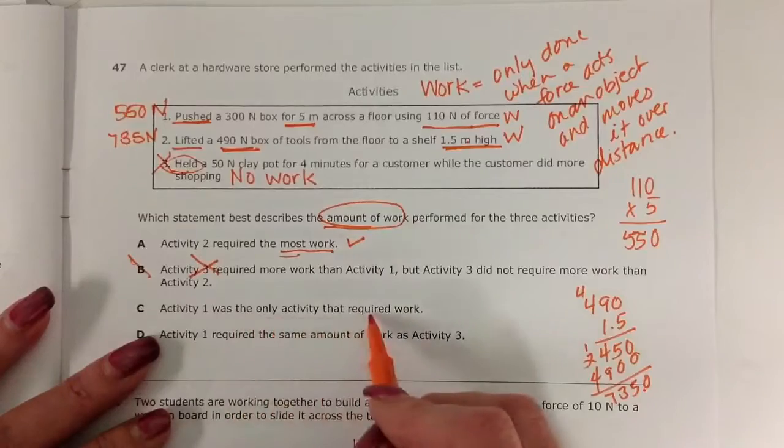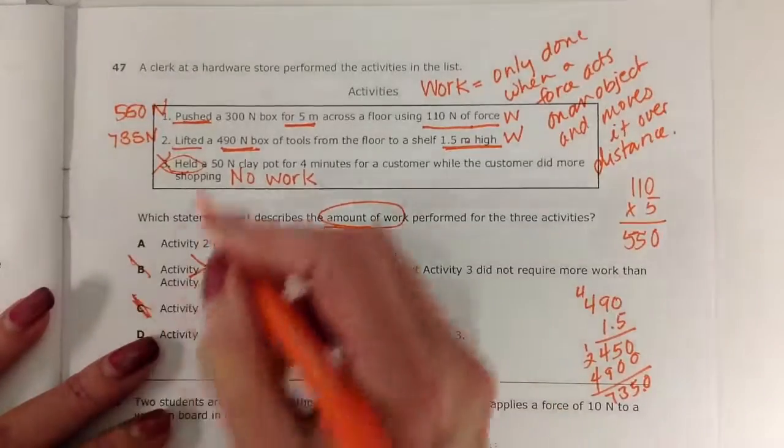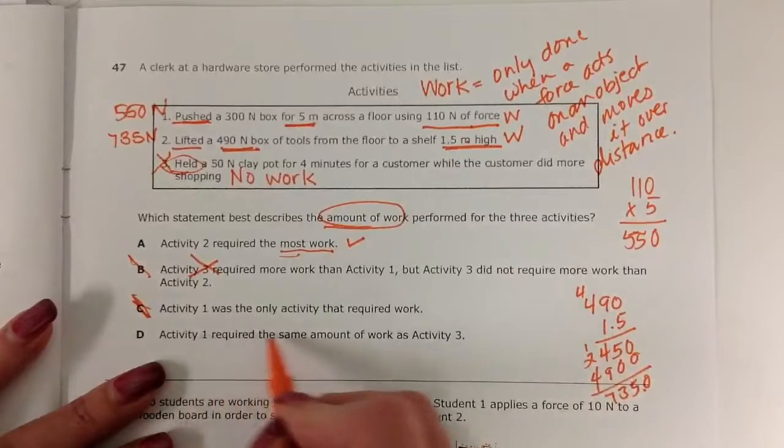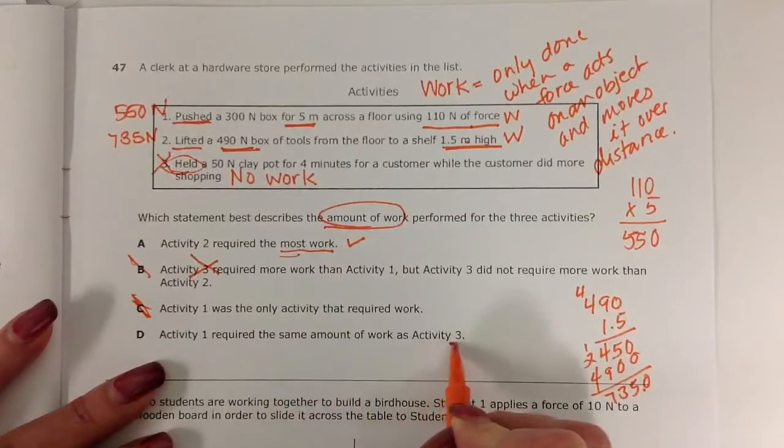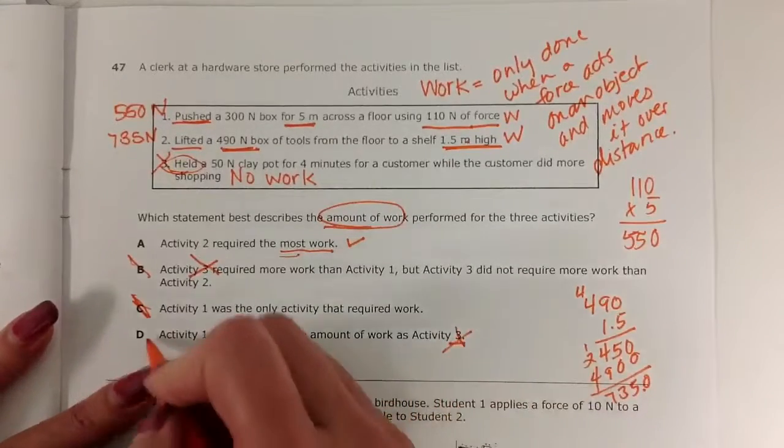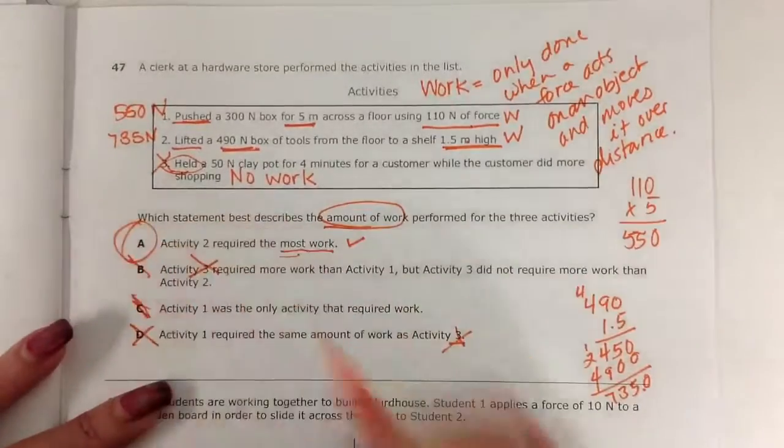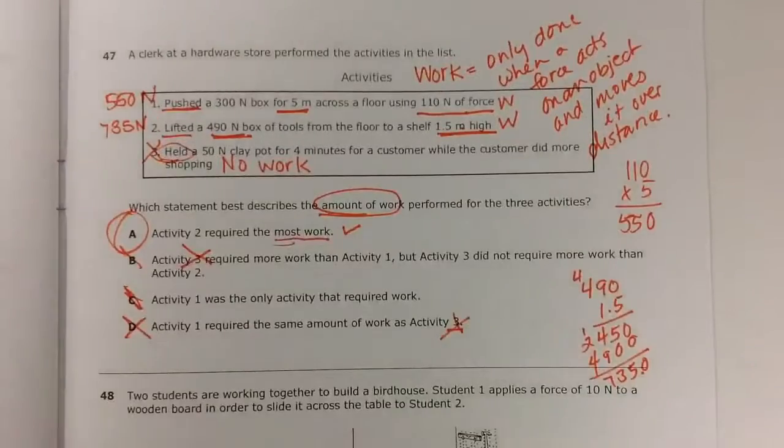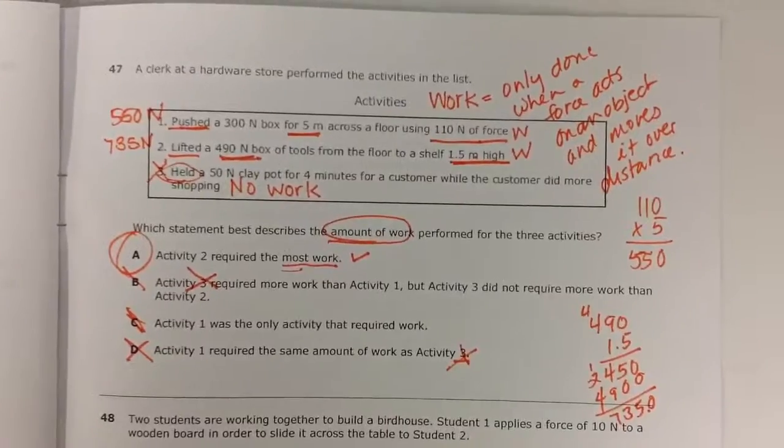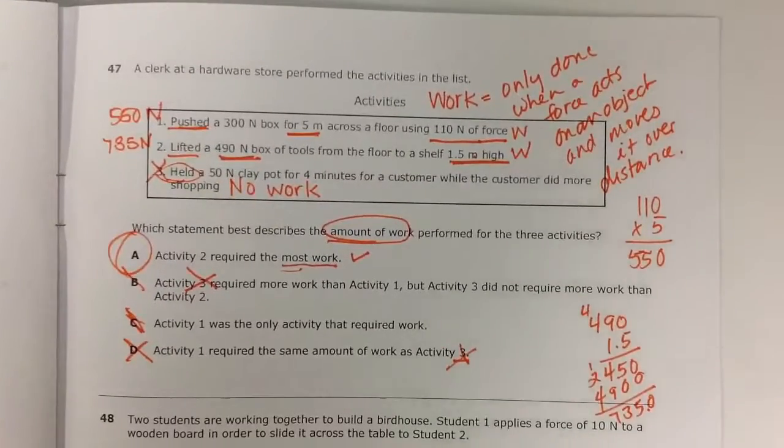Activity one was the only activity that required work? That's not true either—one and two both did work. Activity one required the same amount of work as activity three? Activity three did no work. So our answer is going to be A. Activity two required the most work because when we calculated it out, we saw that to be true.